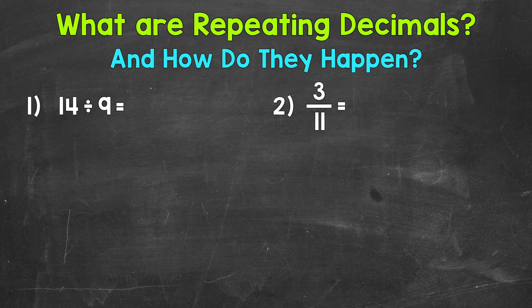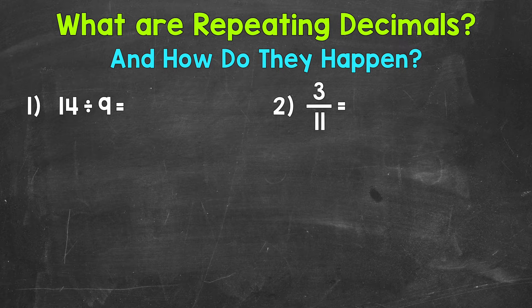Repeating decimals are just decimals that repeat without ever ending, so they go on forever. This can be one digit that repeats, for example a repeating six, or it can be a group of digits that repeats, like one two three, one two three, one two three — those digits repeat without ever ending. Repeating decimals have a repeating pattern whether it's one digit or multiple digits.